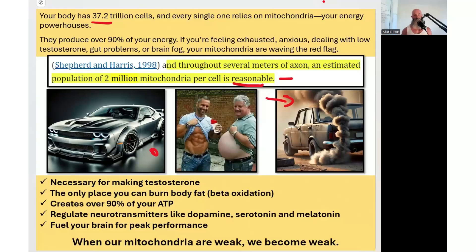And guess what else? The mitochondria are a necessary step to make your testosterone, your sex hormones. They're the only place you can burn body fat and get that body that you want. They create up to 95% of ATP, your cellular energy. And they're also integral in creating things like dopamine for motivation, focus, learning, serotonin for immune health, gut health, and a happy, calm brain, and melatonin.